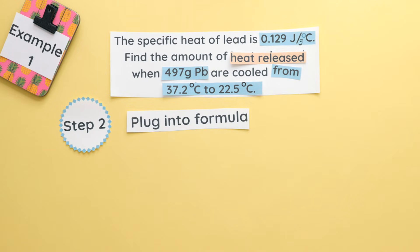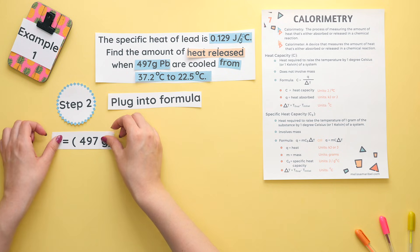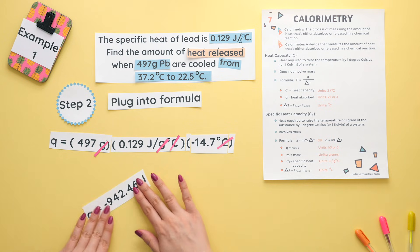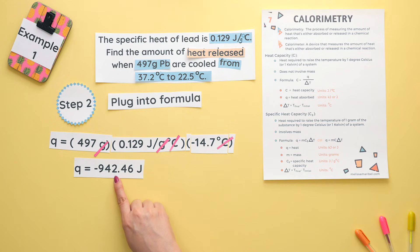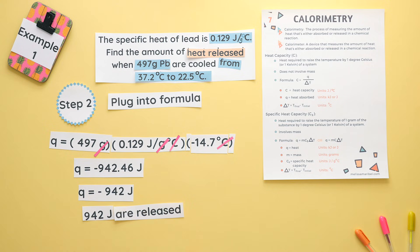Step 2: Plug everything into the formula. Here's the formula we will use. We have our mass in grams, specific heat capacity, and change in temperature. Multiply all of these together and our units of grams and Celsius cancel out, and we are left with heat in joules. Make sure to round to three sig figs. Now we could have written our answer as negative 942 joules, or we can write it without the negative as 942 joules are released. Both answers are correct here.